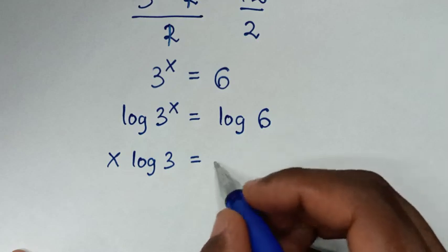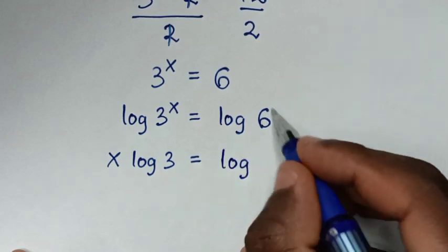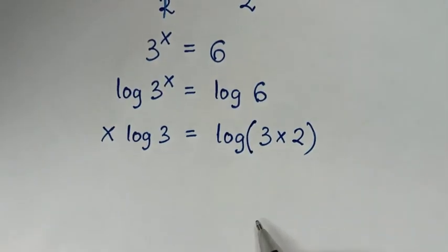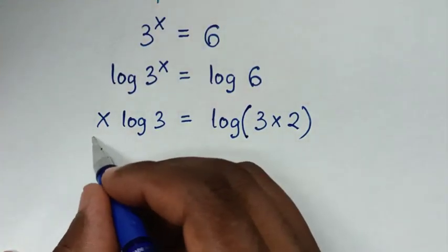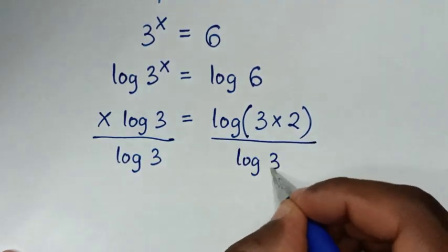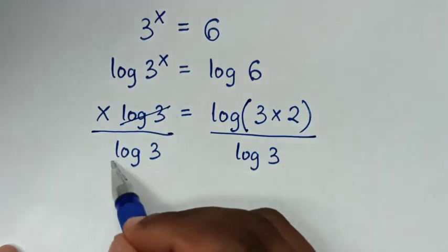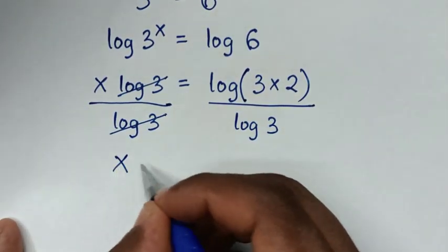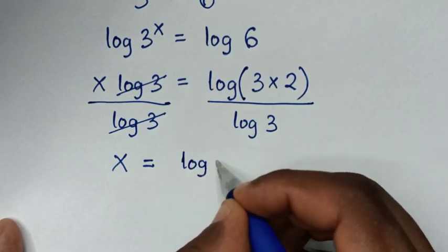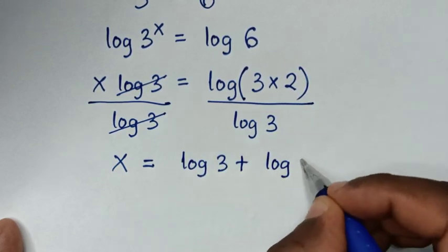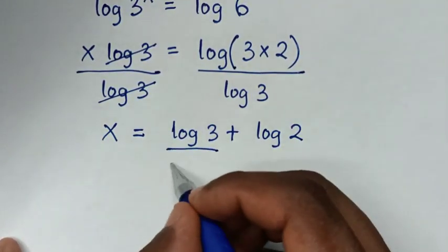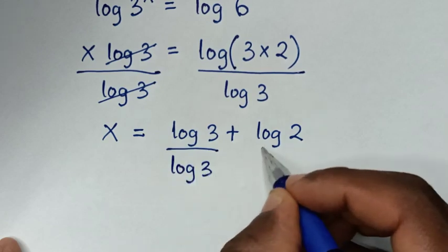Log of 6 is the same as log of 3 times 2, so we'll place a bracket there. Then in the next step we'll divide by log of 3 on both sides. So this log of 3 will cancel with this log of 3. Then it will be x is equal to log of 3 times 2, which is the same as log of 3 plus log of 2, divided by log of 3.